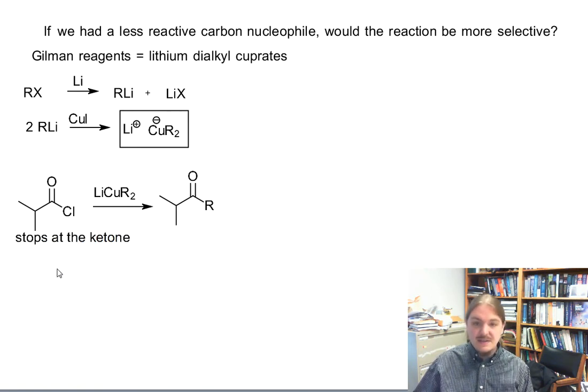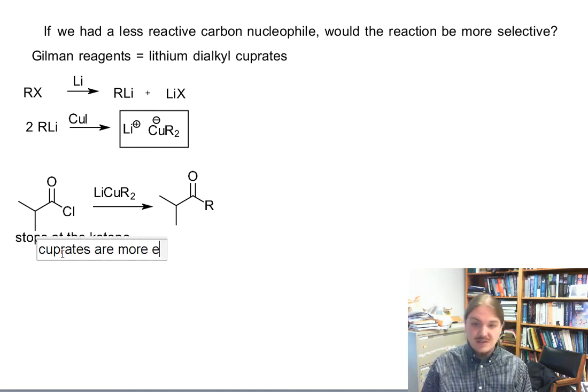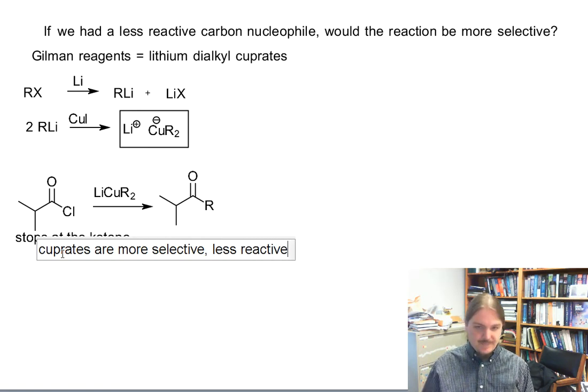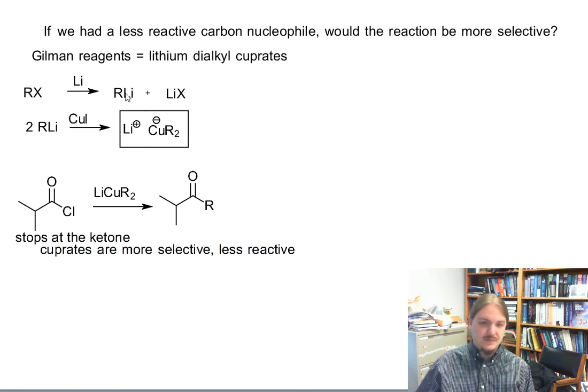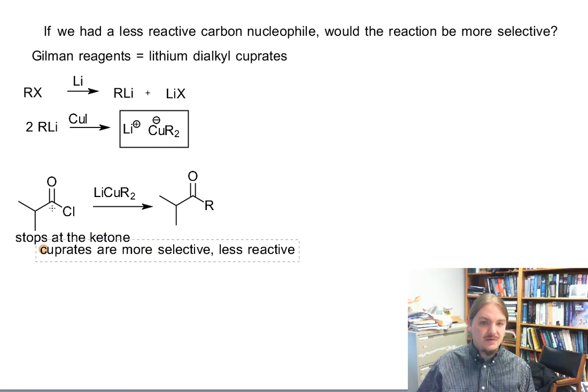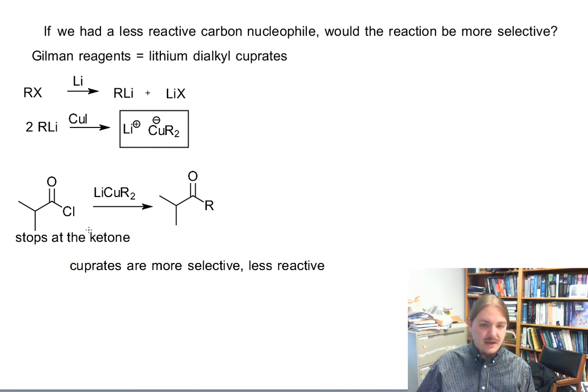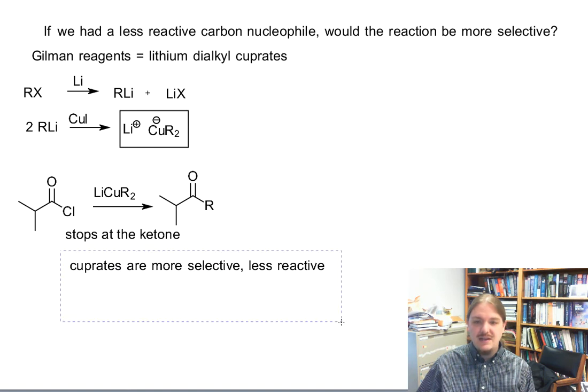It stops at the ketone because the cuprates or Gilman reagents are more selective. It means they are less reactive than Grignard reagents.